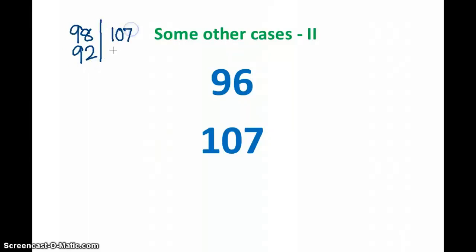So that means the numbers till now what we have done are either less than the base or more than the base. But we are seeing a case here where one number is less than the base and the other number is more than the base. Let's see how we can do this.